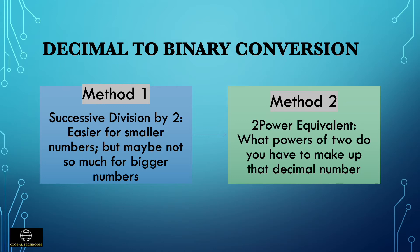Next, let's see the second method: the powers-of-2 equivalent method. In this method of conversion, we have to deconstruct the decimal number as a sum of powers of 2.